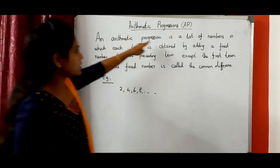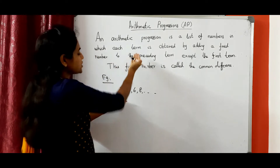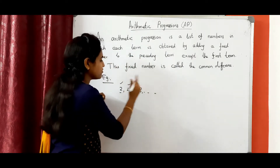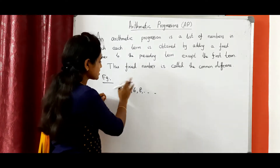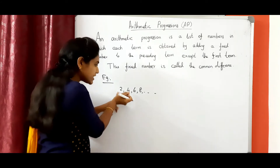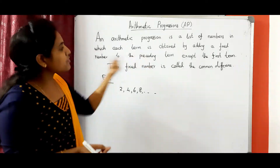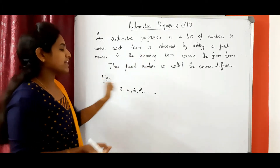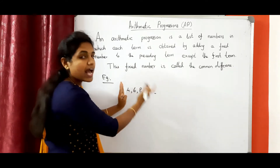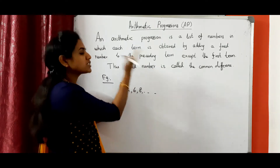Arithmetic Progression is a list of numbers in which each term — each number is called a term. This is the first term, second term, third term, fourth term. So each number is called a term. Each term is obtained by adding a fixed number to the preceding term, except the first term. The remaining terms are obtained by adding the fixed number to the preceding term.